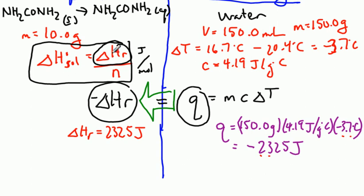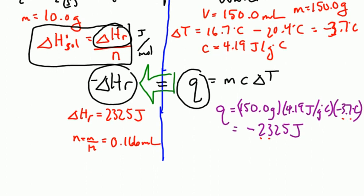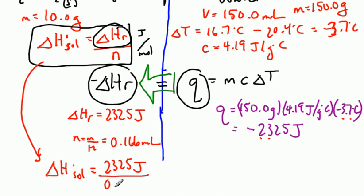And that's one value that we need. We also need to know the number of moles. Moles is mass divided by molar mass. And the molar mass was given in the question. So you can work that out. But it's about 0.166 moles of urea that we have. So we can actually calculate the value that we're looking for.